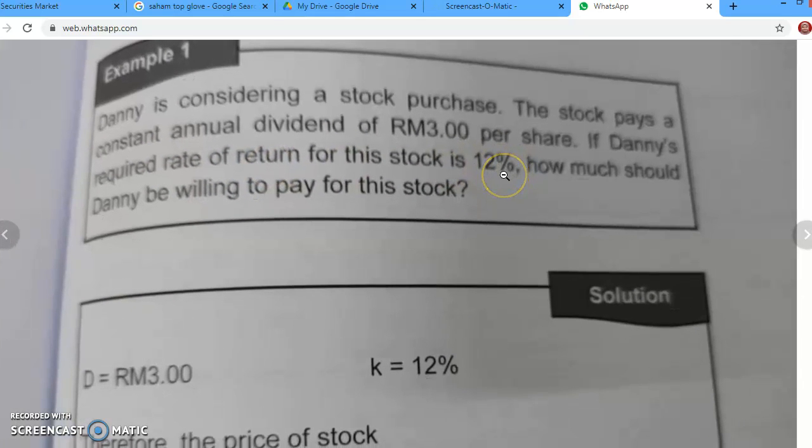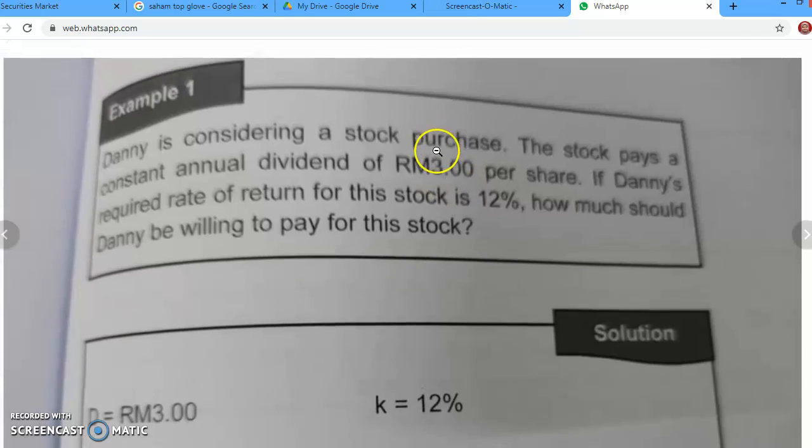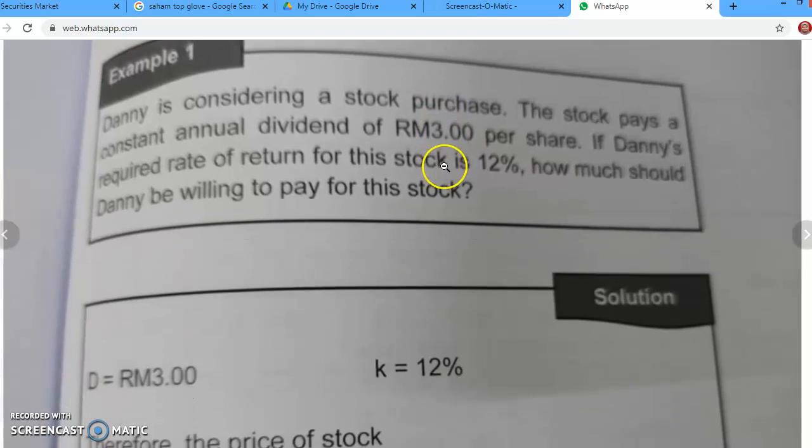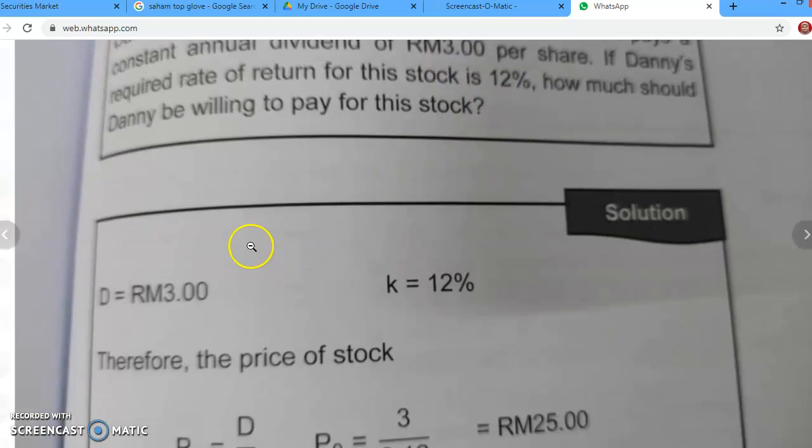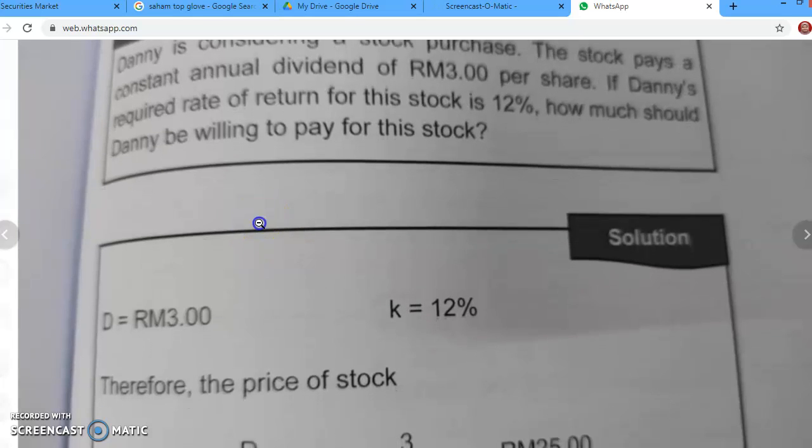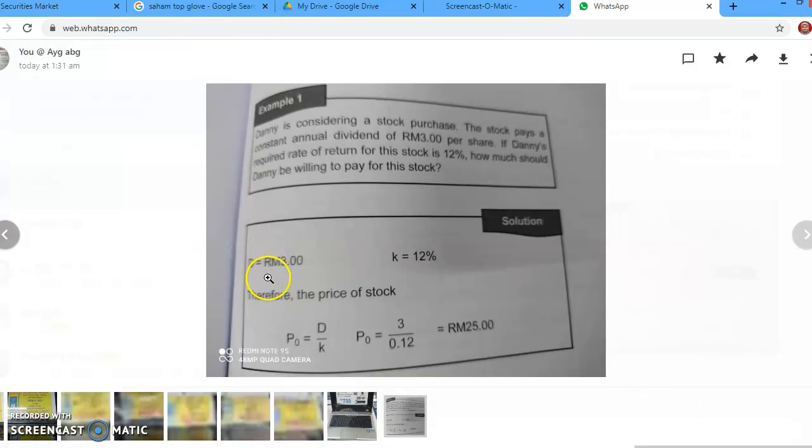And this is our D, dividend RM 3. So how much should Danny be willing to pay for this stock? Jadi berapa Danny sanggup bayar untuk stock tersebut? So kita guna formula yang simple ini tadi iaitu price equal to D over K. So P0 referring to price of the common stock.